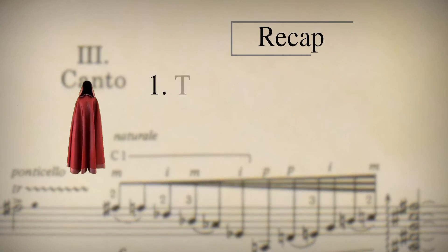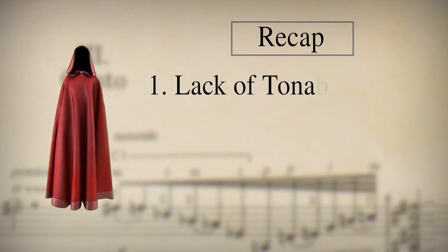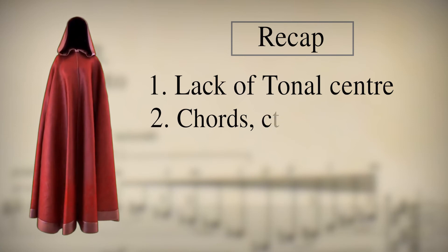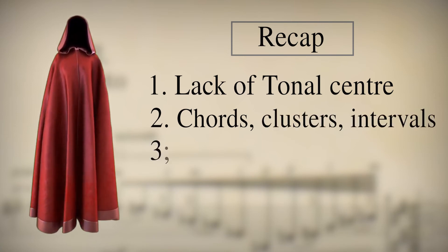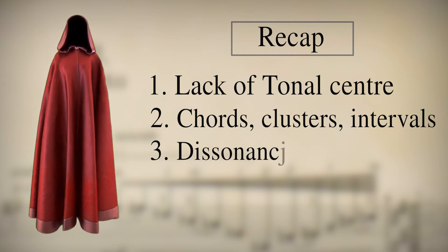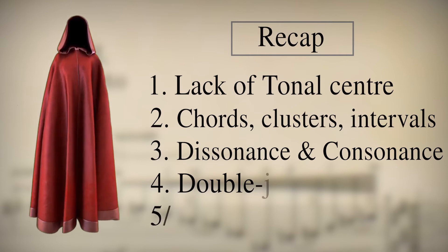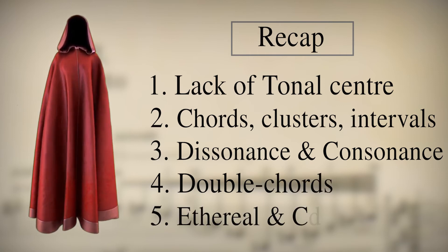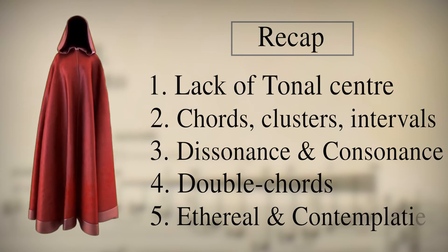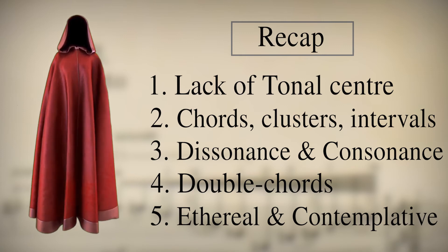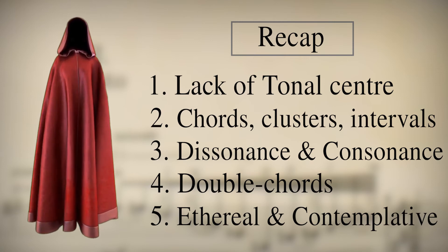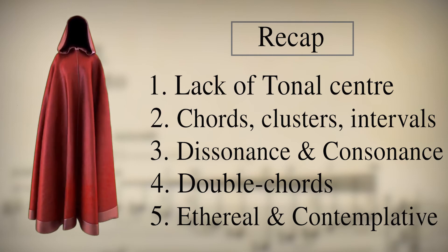Synthesizing this section: Ginastera does not have a specific tonal center, but rather chords that serve as sonic beacons. Throughout the entire sonata, he uses resources such as atonal clusters, predefined intervals, tritones, and more. Canto is full of beautifully combined dissonance and consonance. Another resource the composer is fond of is the employment of double chords — a great way to create stability and dissonance simultaneously. The harmonic language found within this movement creates a rich and wholesome music complexion of ethereal and contemplative character.